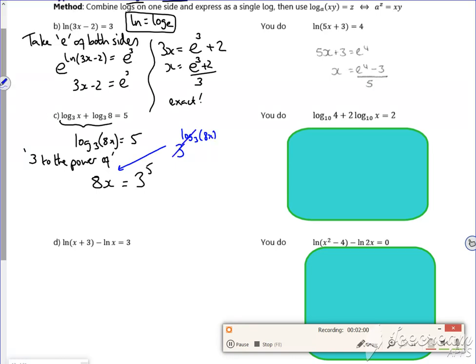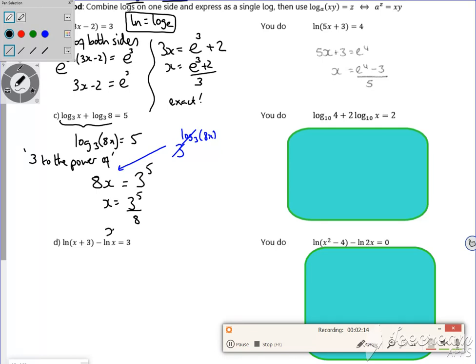Like the ln and the e cancels. Right, if you try it on your calculator, it works. So then, if I have x is 3 to the power of 5 over 8, it's 243 over 8.